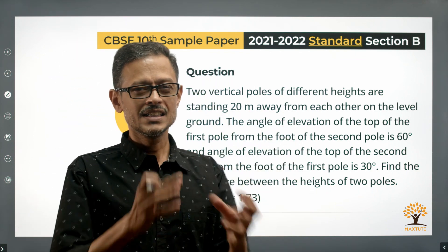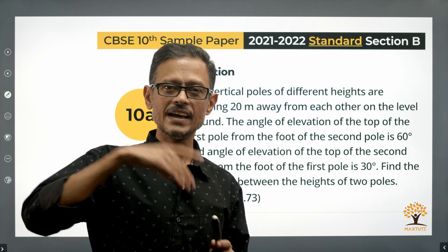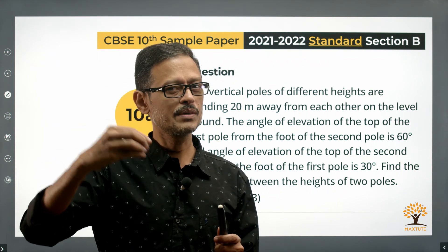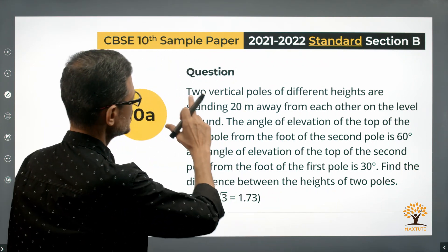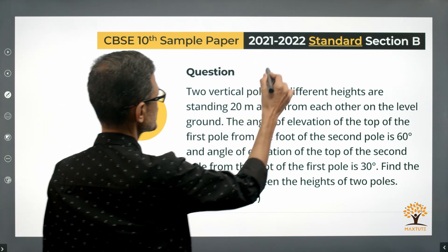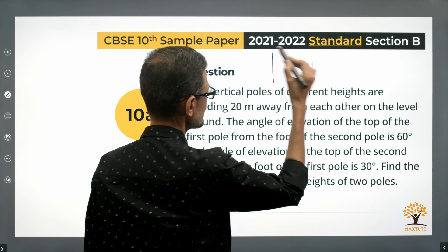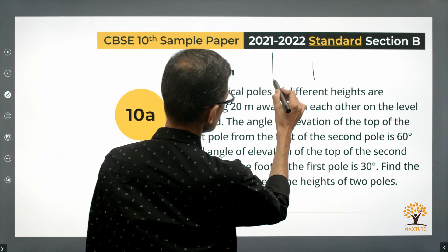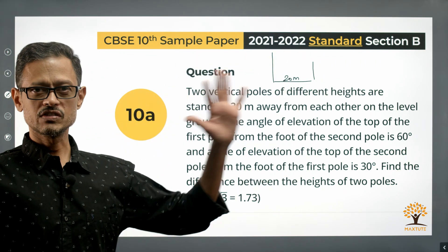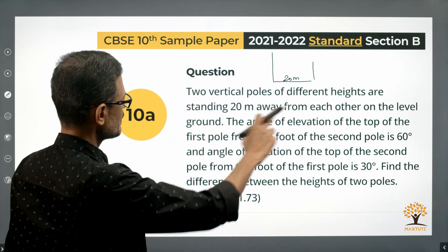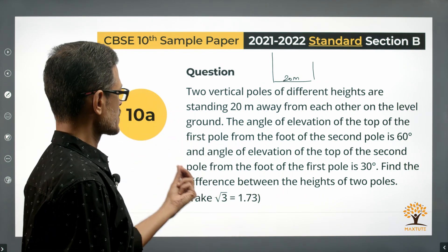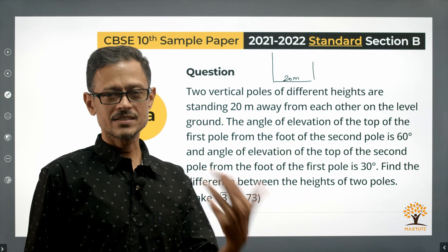As we are reading the information, let's quickly draw a diagram. Two vertical poles of different heights are standing 20 meters away from each other. There's one pole here, different height, second pole here, and the distance between them is equal to 20 meters. Both of them are on the ground level. The angle of elevation to the top of the first pole from the foot of the second is 60 degrees, and the angle of elevation to the top of the second pole from the foot of the first pole is 30 degrees.